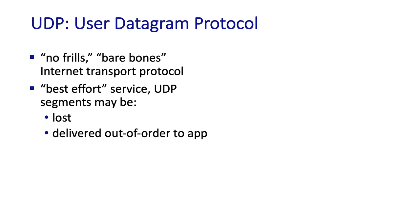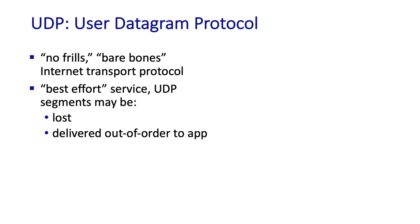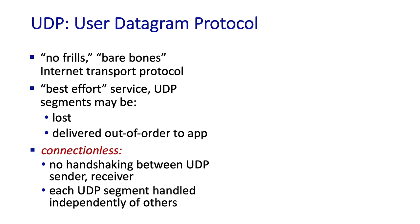UDP is a simple, no-frills, bare-bones protocol. It provides best-effort service — UDP basically sends segments and hopes they get to the other side. Those segments can be lost or delivered out of order. Because of this simple service, there's no need for handshaking between a UDP sender and receiver, no need for shared state. In that sense, UDP is referred to as connectionless. Each UDP segment is handled independently of all other arriving segments.